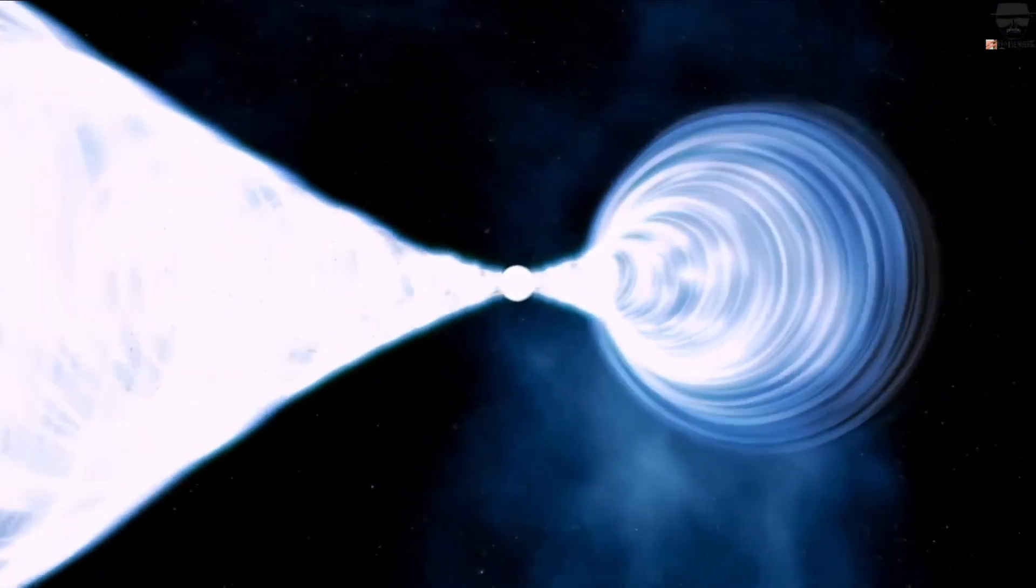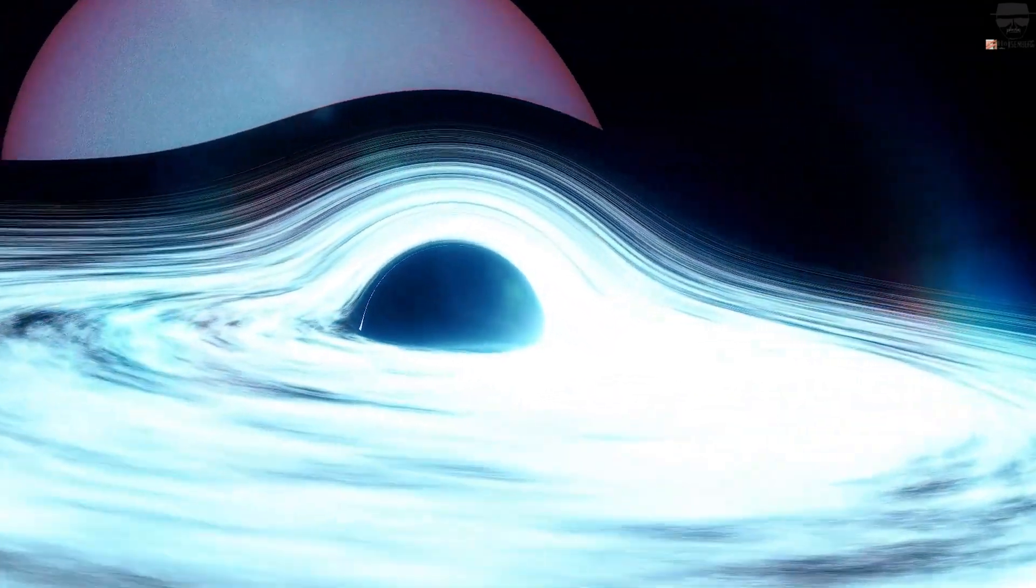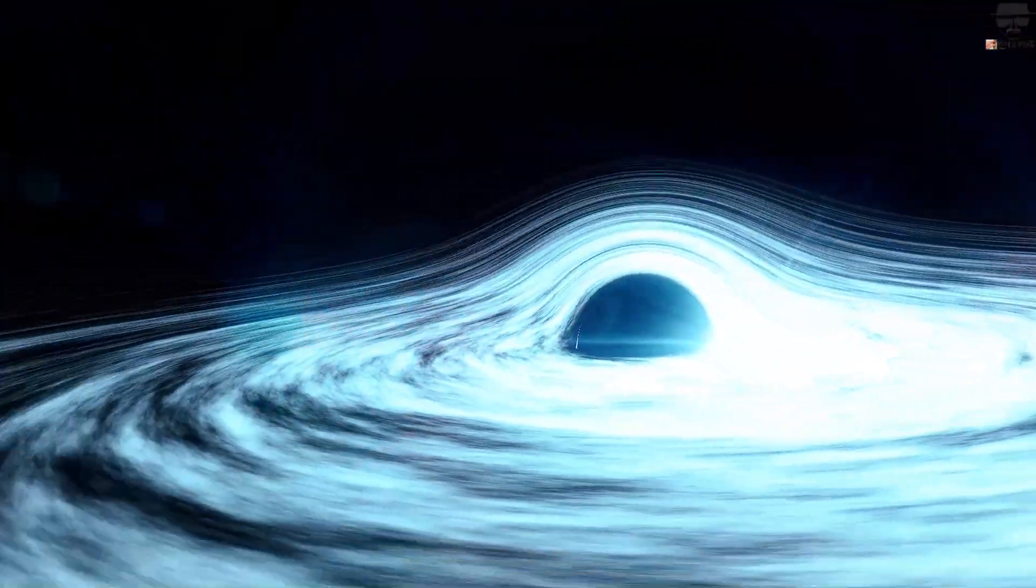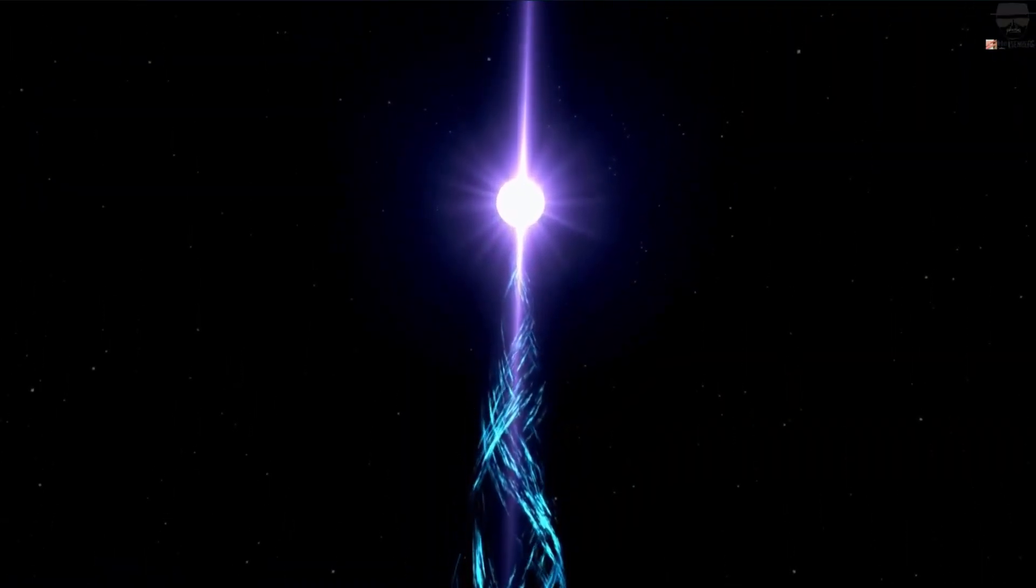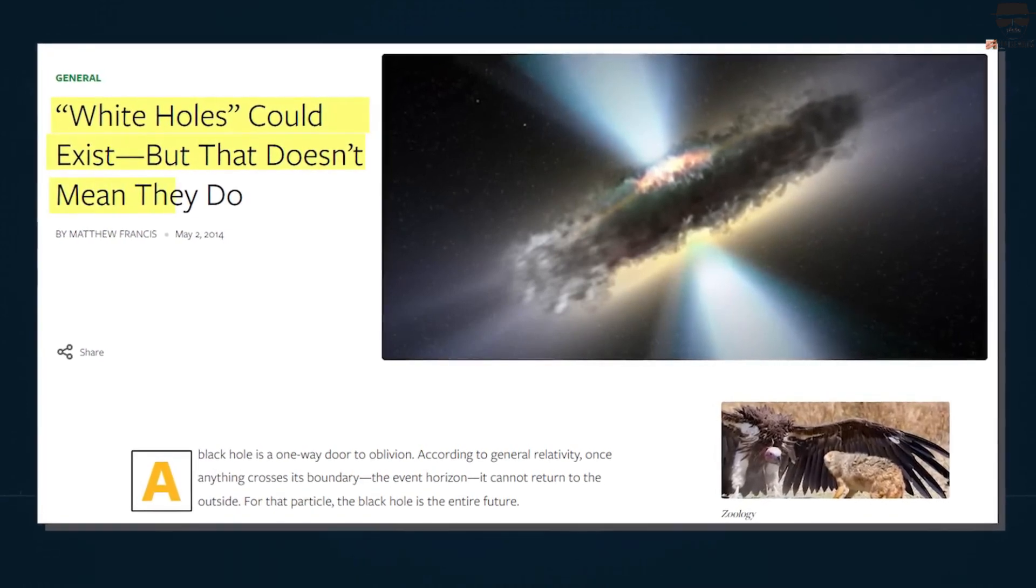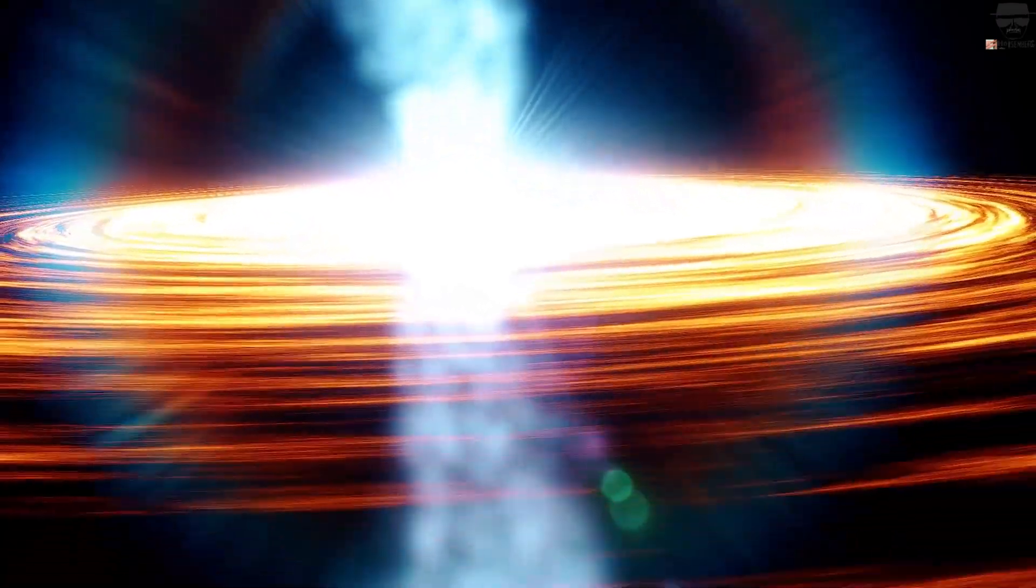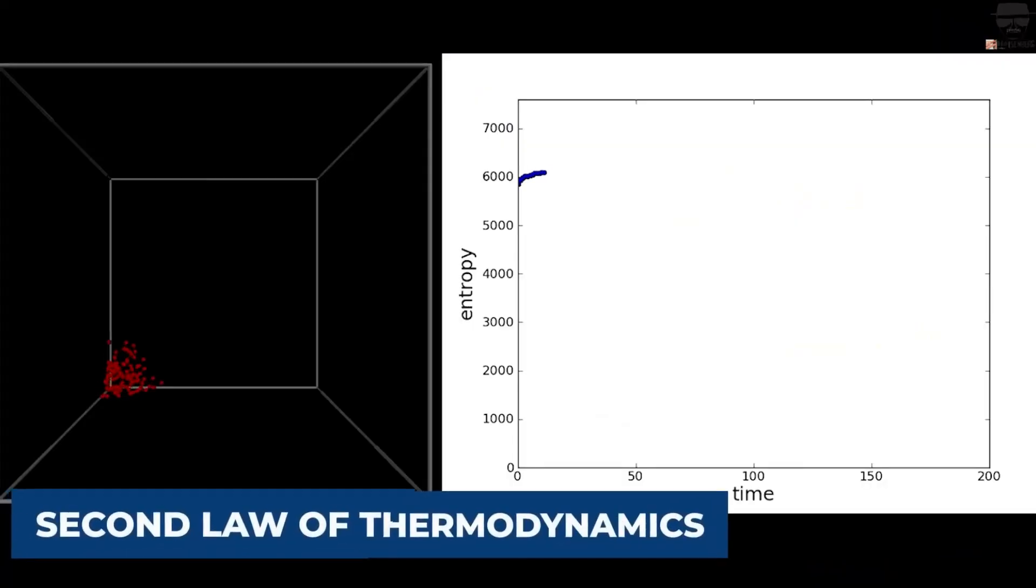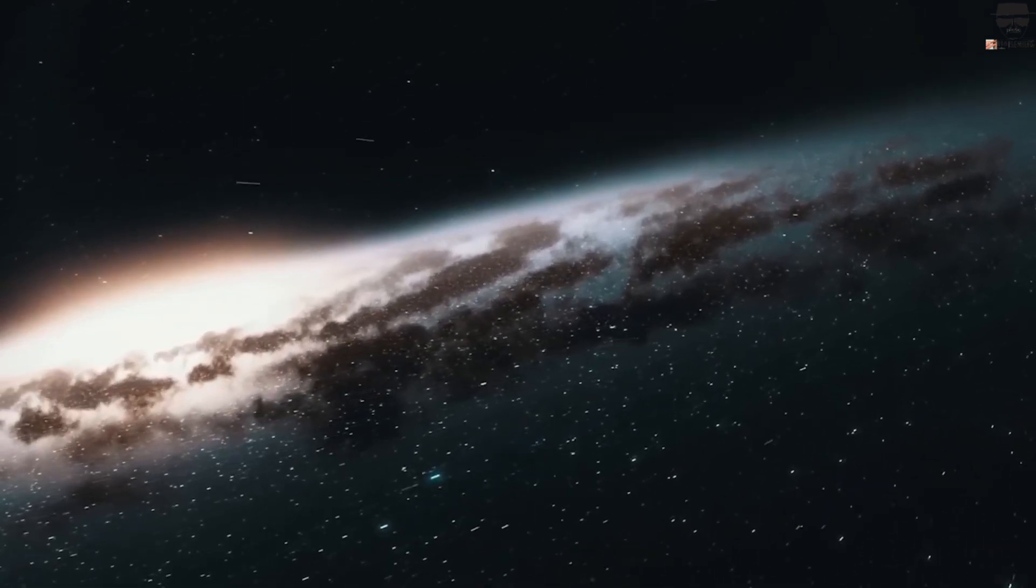However, not all scientists agree that white holes exist, which makes the recent discovery about them even more significant. But why do some scientists doubt that white holes exist? Well, they claim that just because a white hole obeys general relativity and is mathematically sound doesn't mean it's practical. This is why some scientists call white holes an impossible possibility, meaning that while they can't be completely ruled out, they also don't expect to see one with telescopes. They base their thinking on the fact that this phenomenon violates the second law of thermodynamics, which says entropy in the universe must always stay the same or increase.